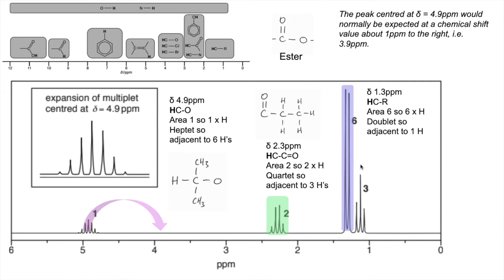And so the final peak, this triplet here at delta 1.1, that must be the other part of this signal here. So we'll just go through the motions. H, C, R environment. Area 3, so 3 hydrogens in the environment.